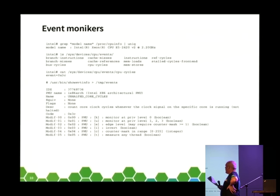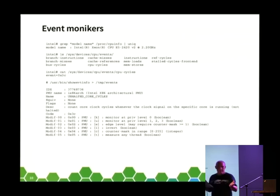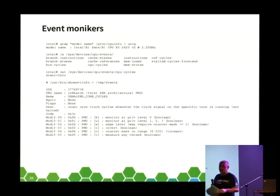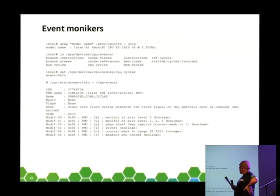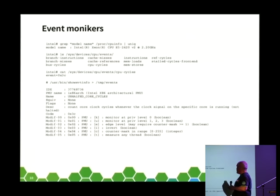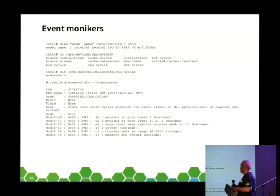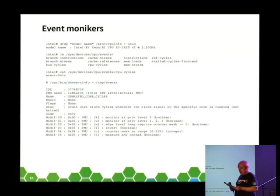libpfm still exists — repurposed from perfmon into a higher-level wrapper over perf to help decode events. The command 'userbin/showevtinfo' comes from the libpfm-devel package. If we run it and search for 0x3c, we get the entry for CPU-cycles: it's one of the architectural perfmon events Intel has guaranteed will be available on the hardware. The description says it counts core clock cycles whenever the clock signal is running — not if the CPU is halted. It's also subject to frequency scaling, so for a constant rate use the ref-cycles event instead.